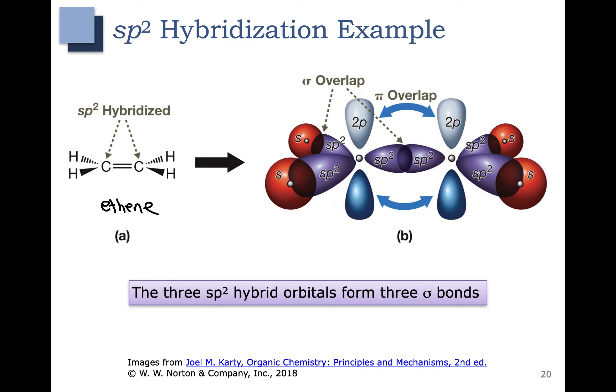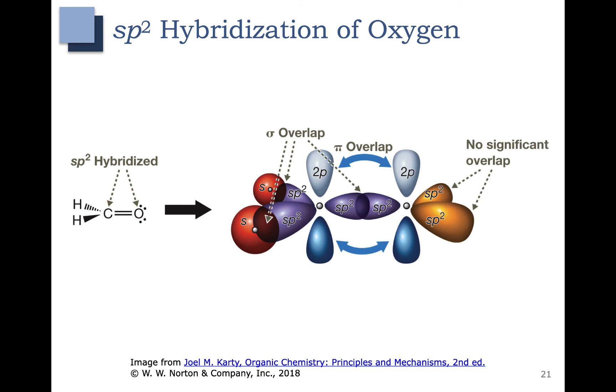So again, the two p orbitals form the pi bonds and the three sp2 hybrid orbitals form the sigma bonds. All of the examples we've looked at so far have been with carbon, which has a valence of four. In the case of carbon, that means that each orbital gets one electron.